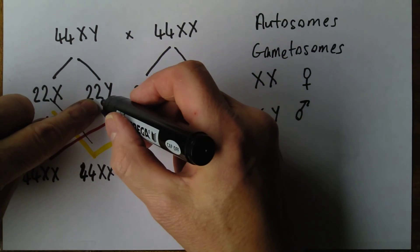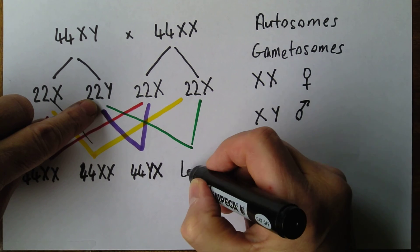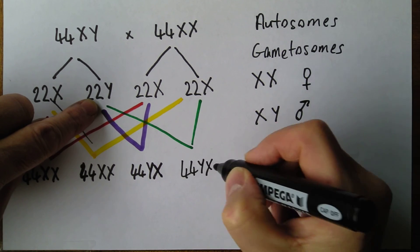Or if it was that one, that sperm there fertilizing that ovum there, 44 plus a Y and an X again, or an XY.